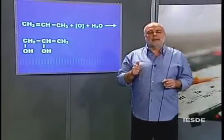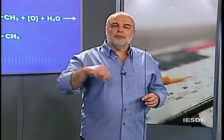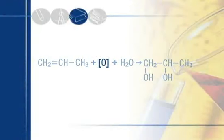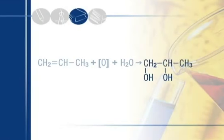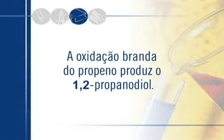Tem que entrar duas hidroxilas, ou seja, dois hidrogênios e dois oxigênios — H2O2. A água vem da própria solução e um oxigênio vem do agente oxidante. A ligação pi arrebenta, entra aqui uma hidroxila, entra aqui uma hidroxila, e você tem um diol vicinal. Diol: duas hidroxilas. Vicinal: em carbonos vizinhos. O outro nome, glicol — 'glic' é o mesmo de glicose, significa doce. Glicol quer dizer álcool docinho. A oxidação branda do propeno produz o 1,2-propanodiol.